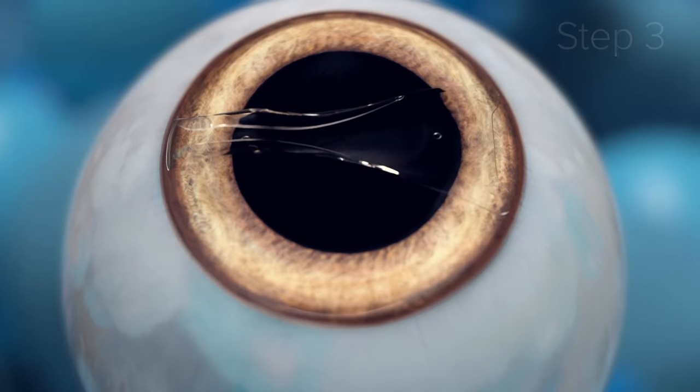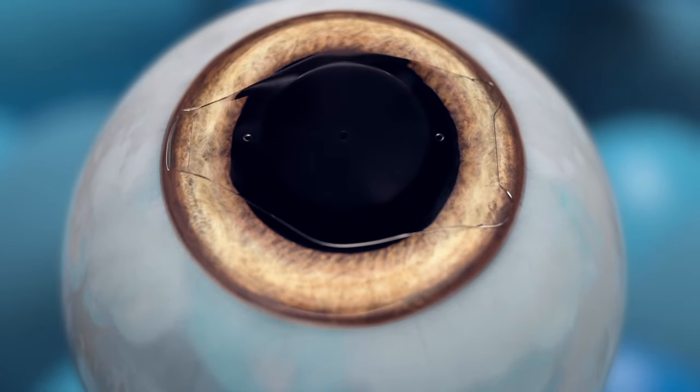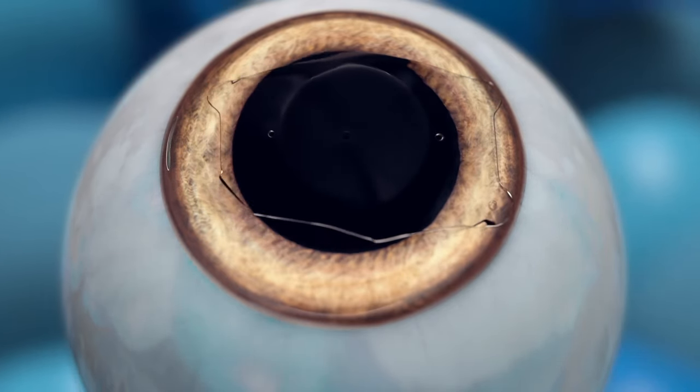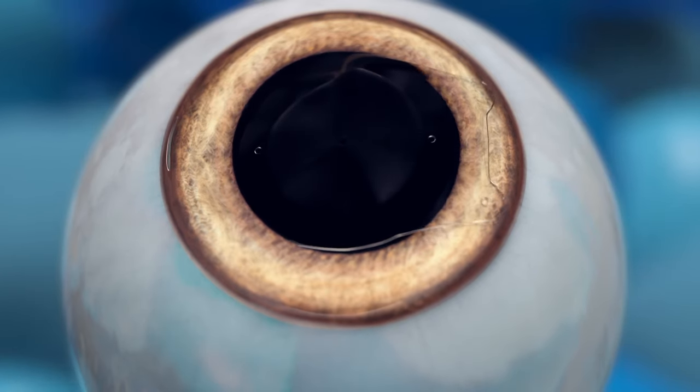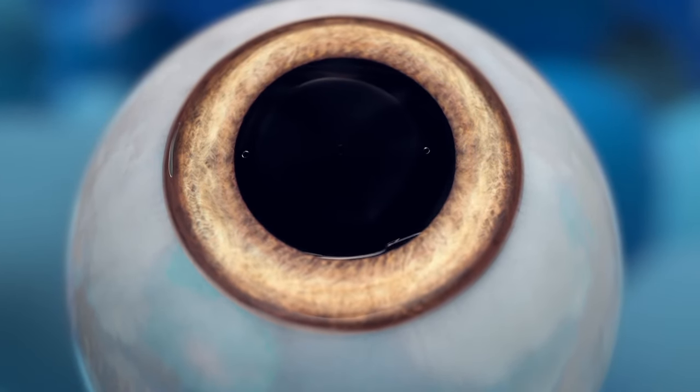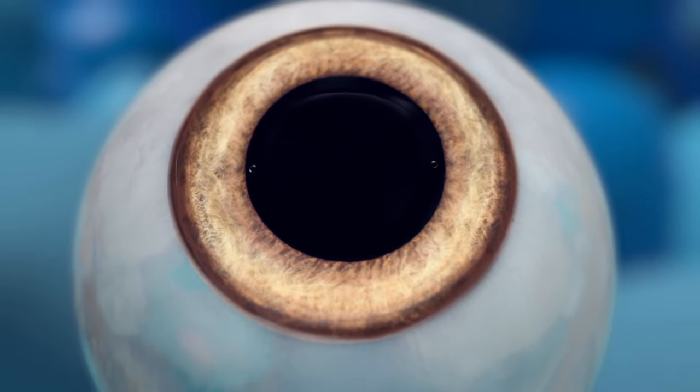Step three: once the Evo ICL lens is inserted, the doctor will make any necessary adjustments to ensure its proper positioning in the eye, securely placing it behind the iris, the colored part of the eye, and in front of the natural crystalline lens.